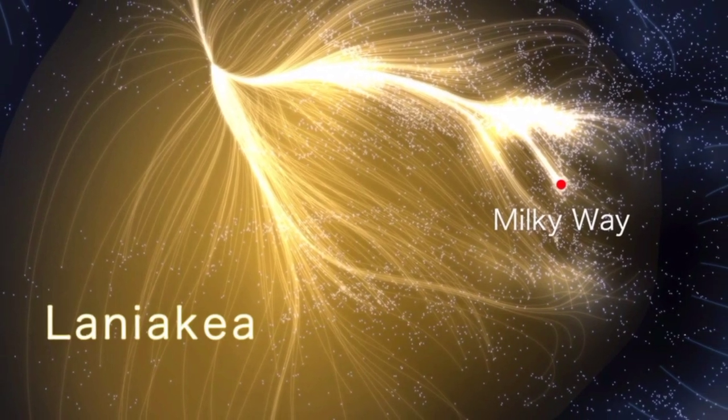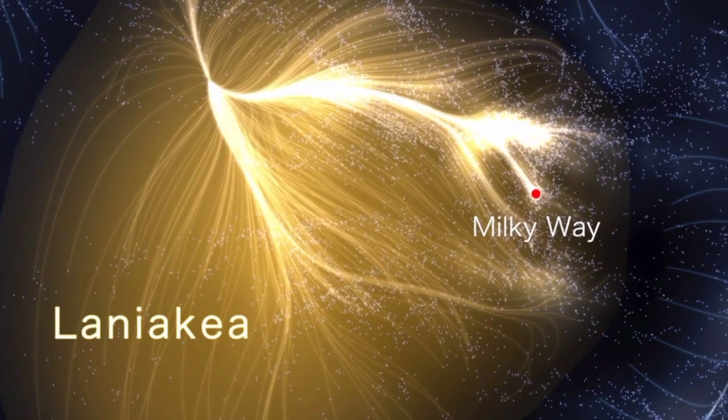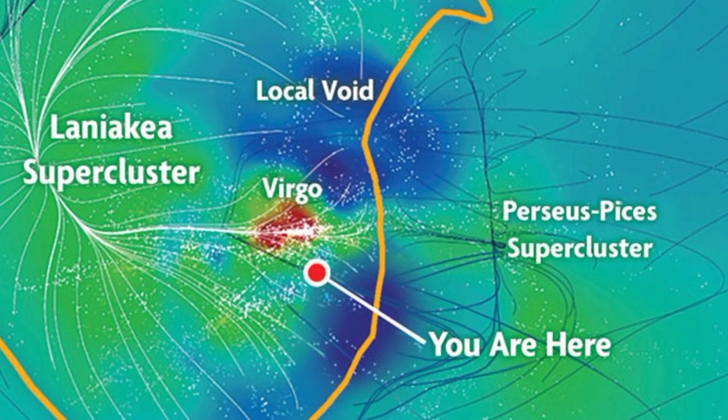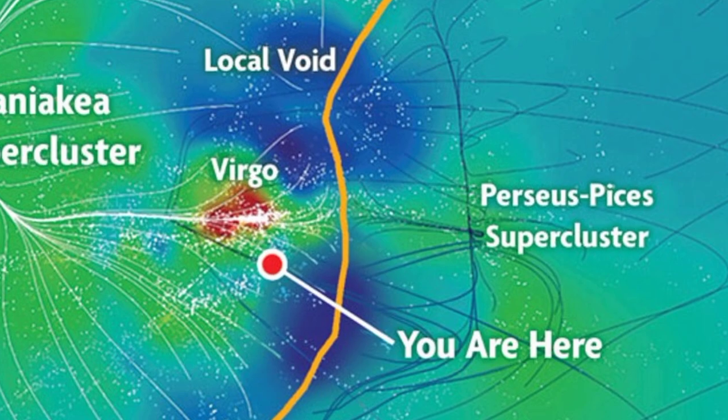The Laniakea supercluster has about 500 galaxy groups like the local cluster and contains approximately 100,000 galaxies stretched out over 520 million light years. It has the approximate mass of 10 raised to 17 solar masses, or 100,000 times that of our galaxy. It is one of the biggest superclusters we have ever known.